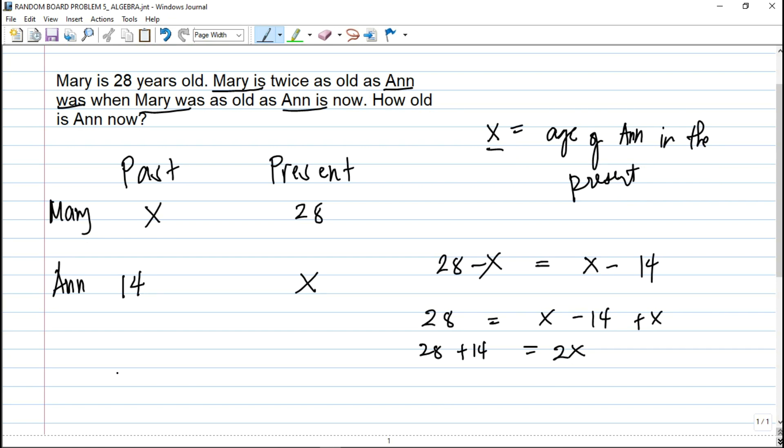Then this gives us 2x equals 42. Then divide both sides by 2. So that gives us the present age of Ann which is 42 over 2, or x equals 21. Therefore, the present age of Ann in this problem is 21 years old.